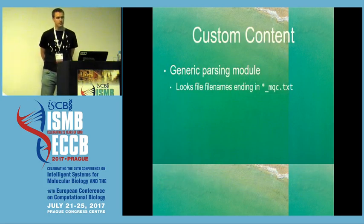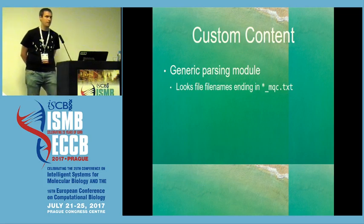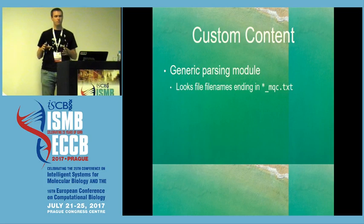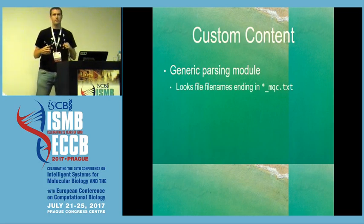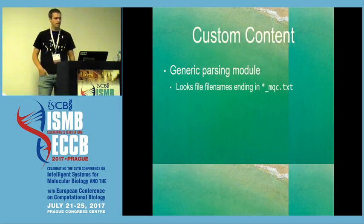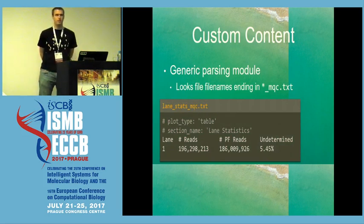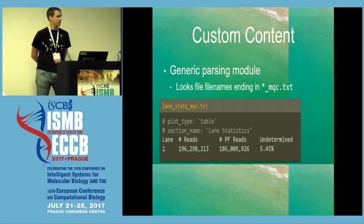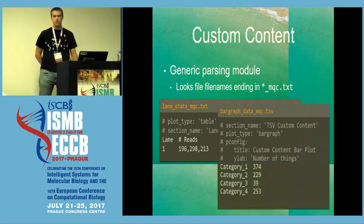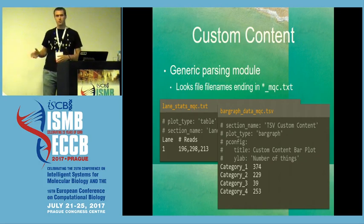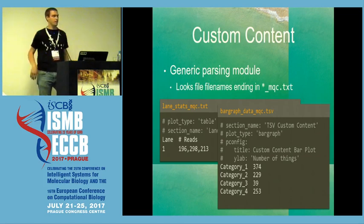One relatively recent addition to MultiQC is what I've called the custom content module. This is designed for groups that might have their own pipelines or custom scripts which generate analysis results, but it's only ever used in their lab — not something worth writing a full module for, and it would never be published for the main MultiQC program because no one else could use it. So if you have complete control of that output and you give it a file name ending in MQC.txt or YAML or whatever, MultiQC will find this and try to figure out what to do with it. You can put in comment lines at the top to specify what MultiQC should do with the data, and you can do bar plots, tables, line graphs — anything that MultiQC can do. And if you can send these files to anyone else, their copy of MultiQC will also work with it, with no customization required.